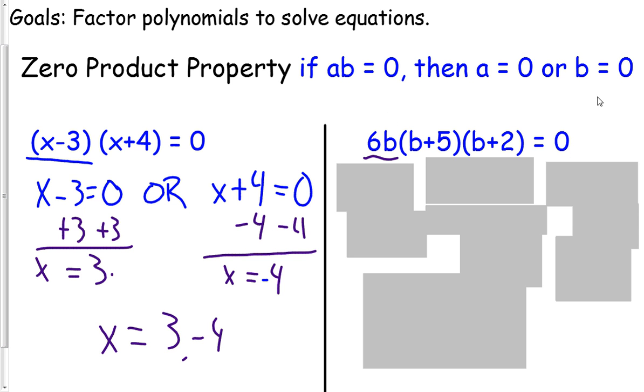Next up is 6b(b+5)(b+2) = 0. So we have three separate pieces multiplying together equals zero. And so we set each piece equal to zero. 6b = 0. So b must equal zero. Divide by six. Divide by six. Zero divided by six is still zero.